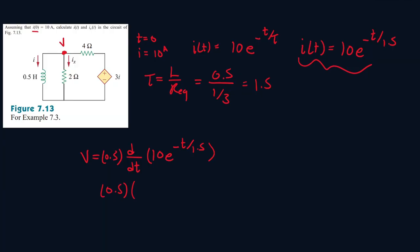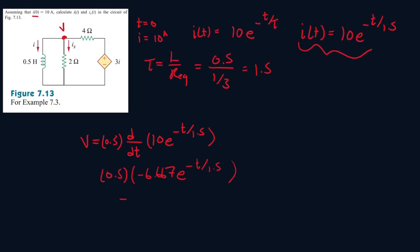So the derivative of that is minus 6.667 E times T all over 1.5. Hold on, give me a sec. I'm just double checking. And yeah, then we times it by 0.5. So it's minus 3.333 E to the power of T over 1.5.